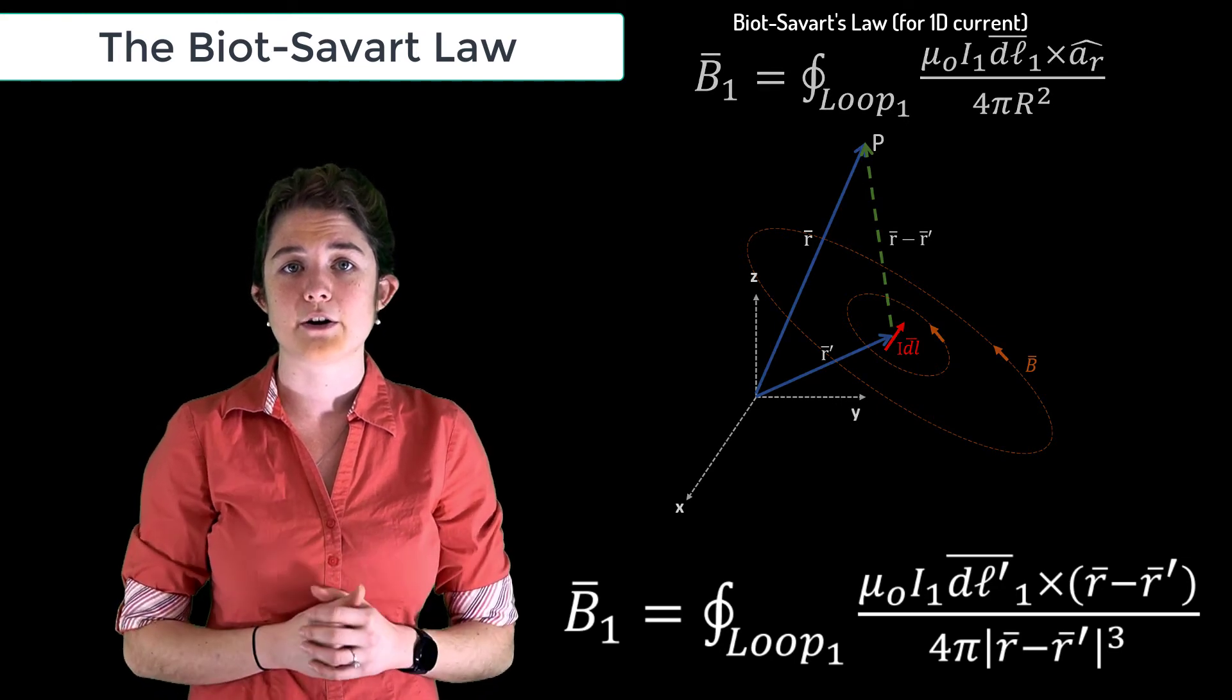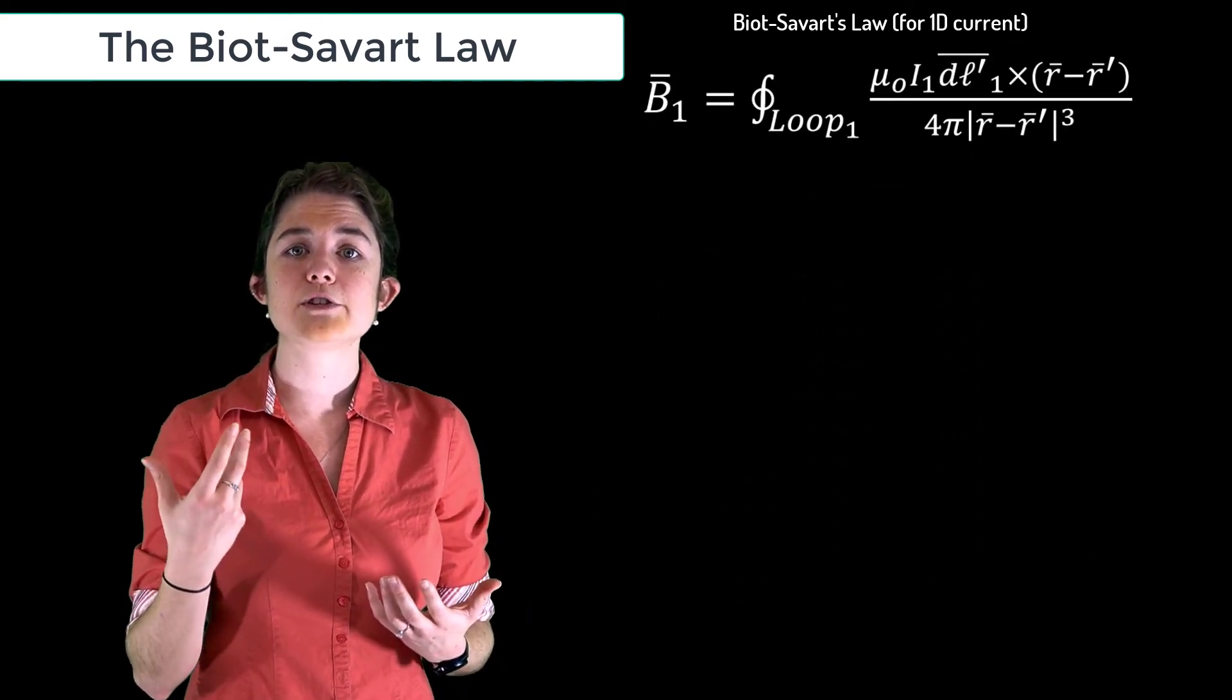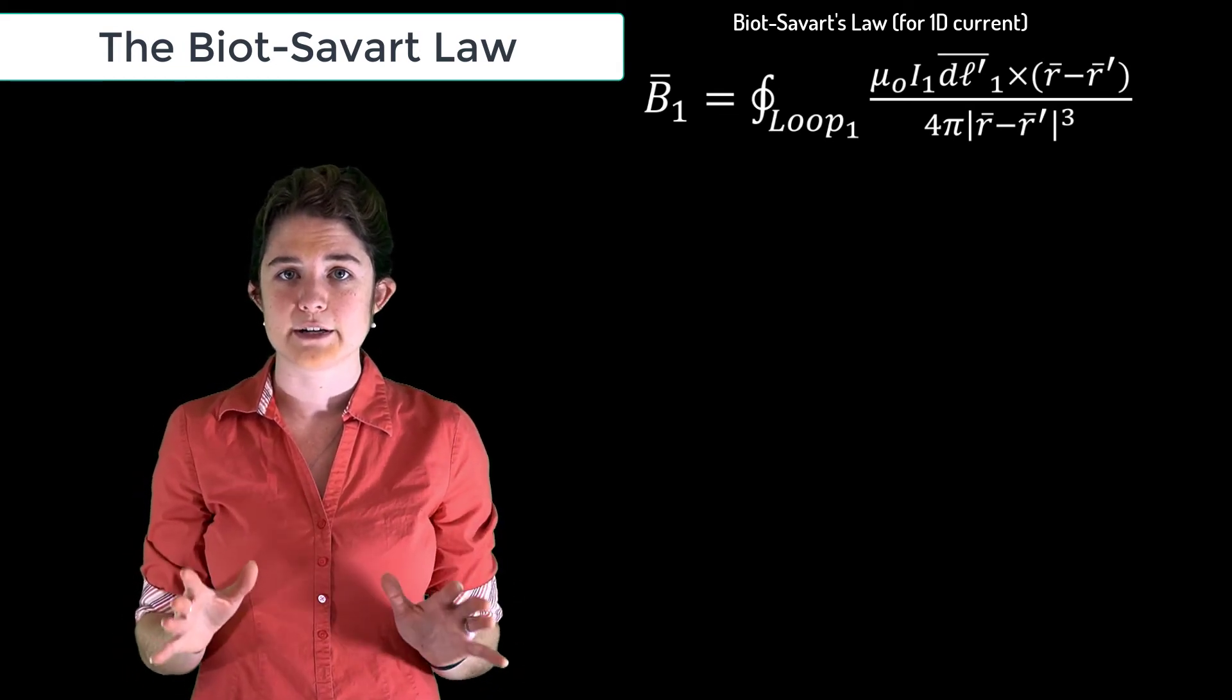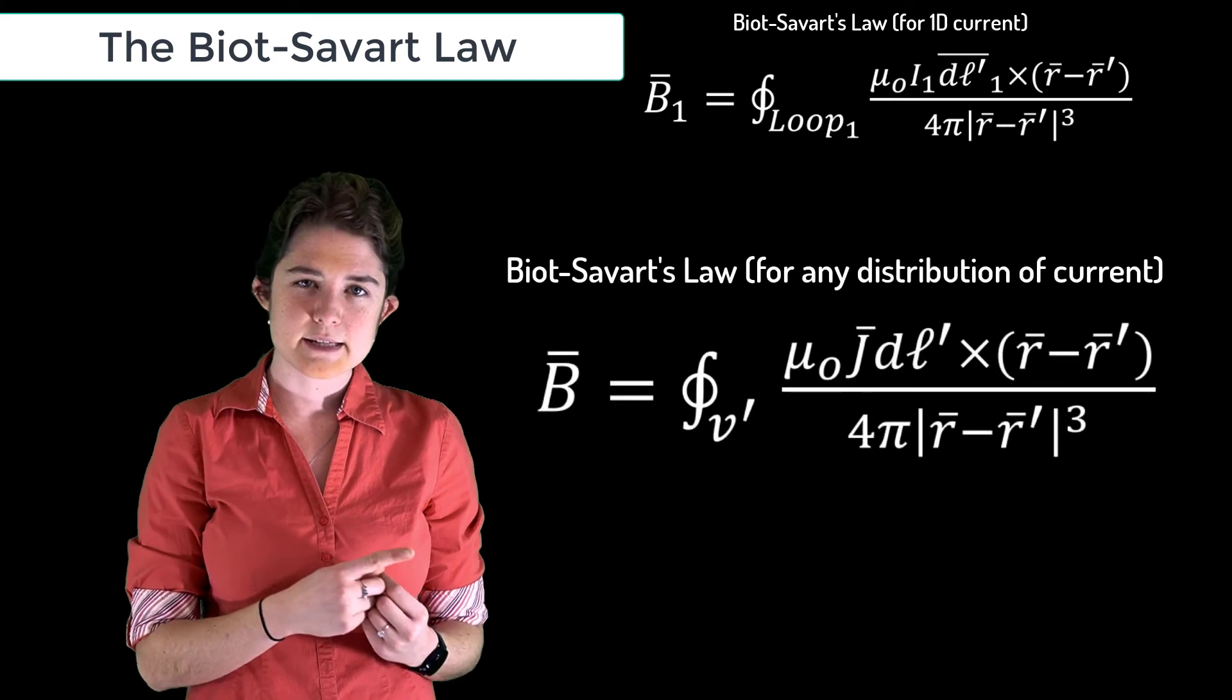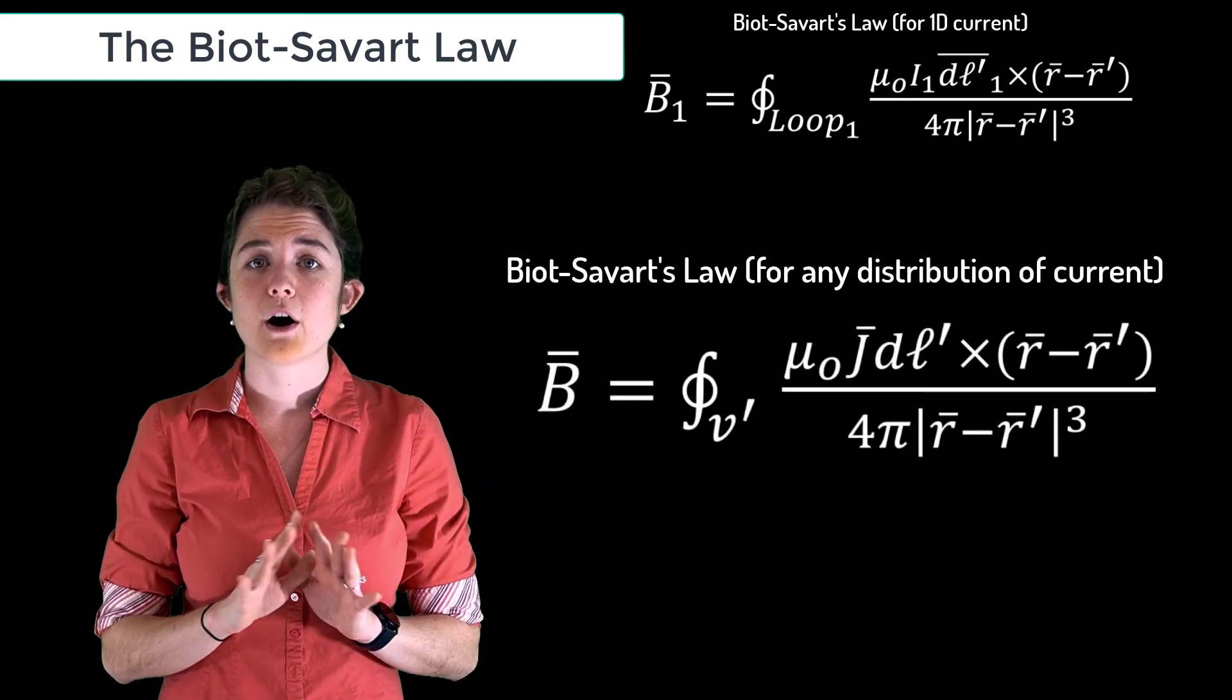Magnetic fields add linearly, so we can use superposition to find the total magnetic field due to any arbitrary current distribution. This then is the general form of Biot-Savart's law, which accounts for all possible combinations of current distributions.